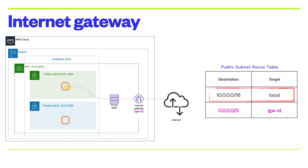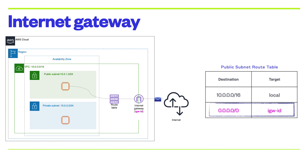If the EC2 in the public subnet wants to communicate with the Internet, it must use a service called an Internet Gateway. An Internet Gateway is a scalable, redundant, and highly available VPC component that allows communication between instances in your VPC and the Internet.